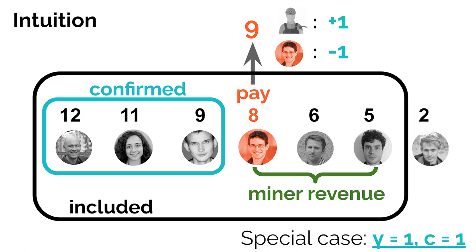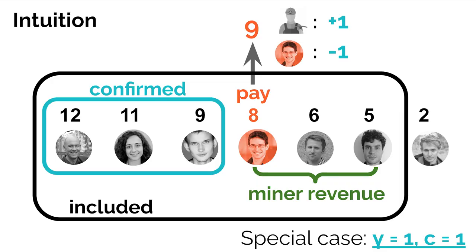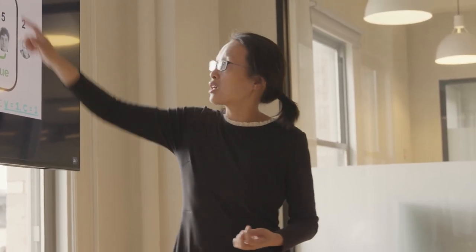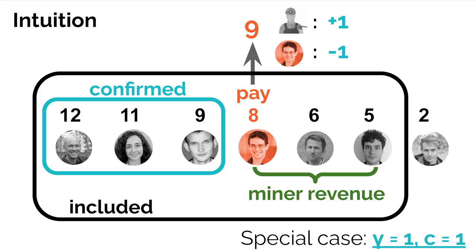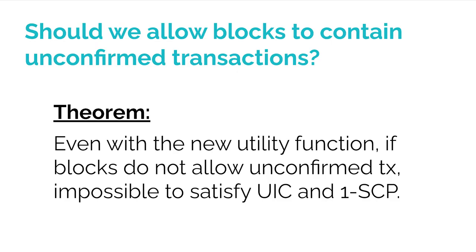Intuitively, why does this work? Imagine a user is colluding with the miner and wants to overbid, say from 8 to 9, which would give the miner one more in revenue. However, this action is not cost-free: assuming gamma equals one, in the worst case the user may end up paying 9 in the future, costing them 1. The plus and minus cancel out, so the coalition is indifferent. This is the intuition; a formal proof requires analyzing all cases, which is done in the paper.